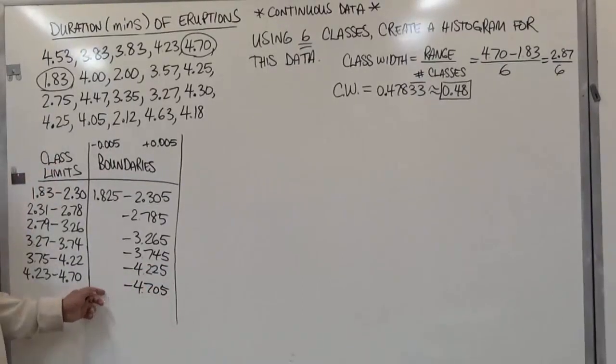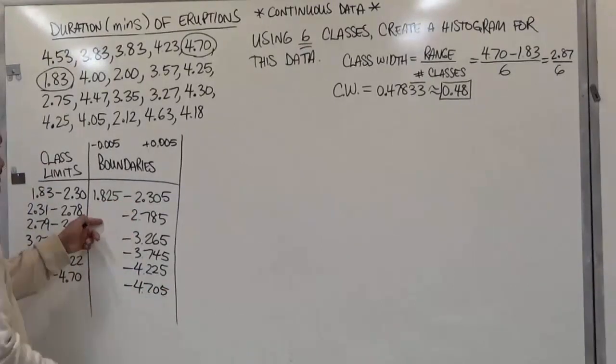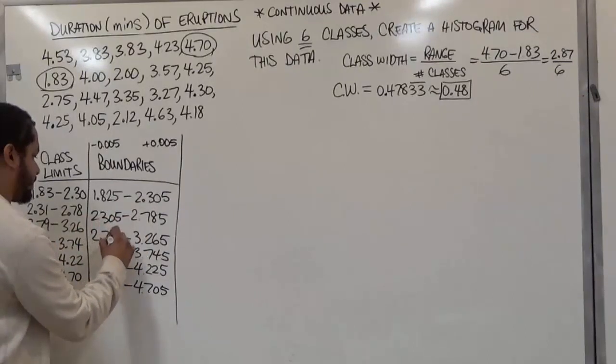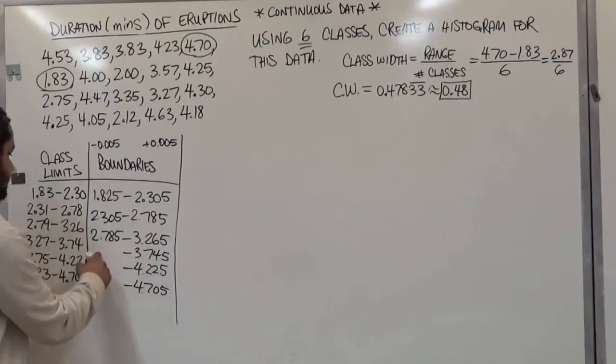Now as far as the left goes, remember the previous entry goes on the next line. So this becomes 2.305. This one goes down here, 2.785. This one goes down here, 3.265.